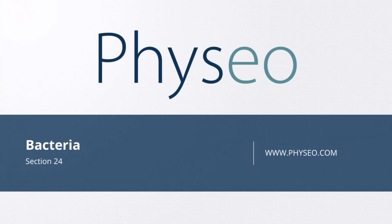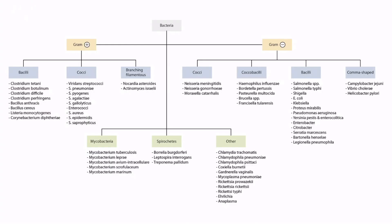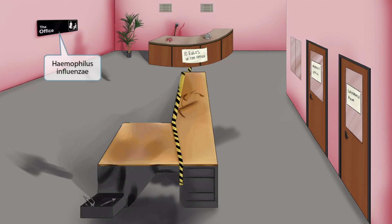Welcome to section 24 of Bacteria. This is our bacteria overview figure, and in this video, we'll be discussing Haemophilus influenzae, or H. flu, which you can see right here. This scene will take place inside of an office, as you can see by the desks and the prominent sign that says 'the office.' Office sounds like Haemophilus, so it will be our symbol for Haemophilus influenzae.